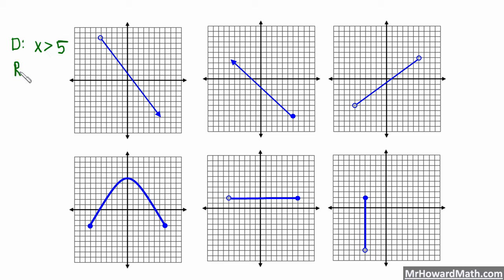Now for the range on this first graph: we want to look for the minimum and maximum Y. The minimum Y goes to negative infinity because the graph continues down in the negative Y direction. The maximum Y is right here at a Y coordinate of eight, but it has an open circle so we use less than, not less than or equal to. So the range is all Y less than eight.